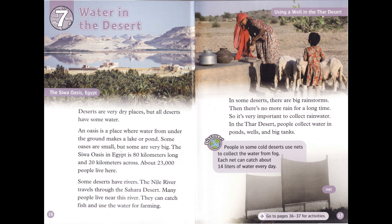Chapter 7: Water in the Desert. Deserts are very dry places, but all deserts have some water. An oasis is a place where water from under the ground makes a lake or pond. Some oases are small, but some are very big — the Siwa oasis in Egypt is 80 kilometers long and 20 kilometers across, and about 23,000 people live there. Some deserts have rivers. The Nile River travels through the Sahara Desert, and many people live near it to catch fish and use the water for farming.